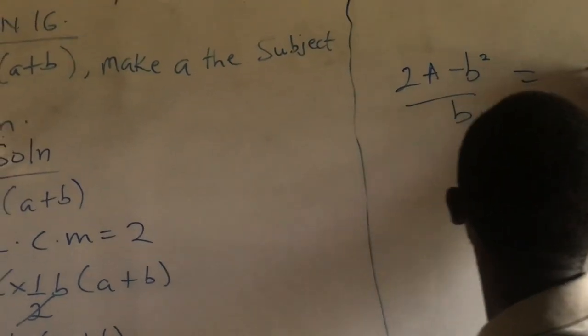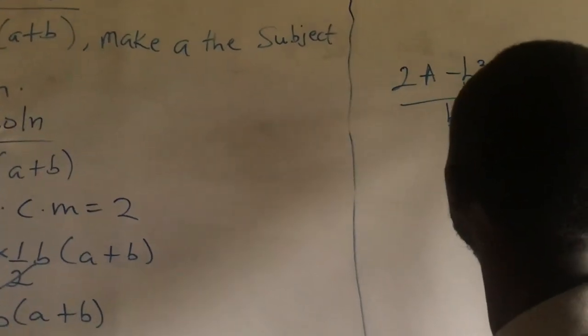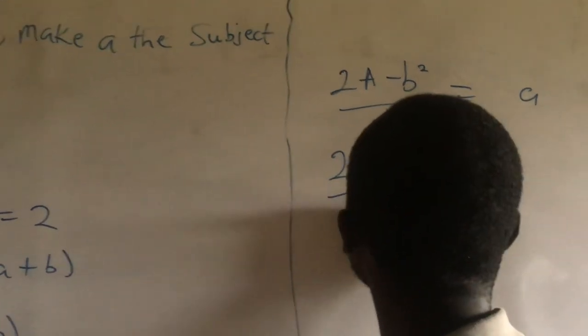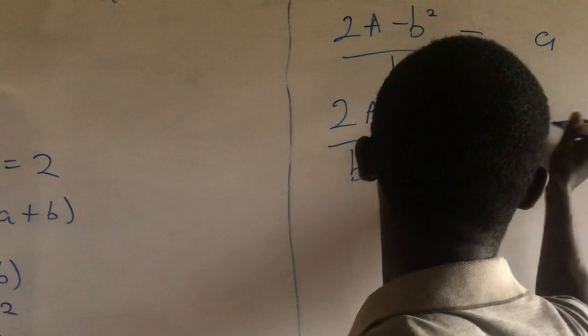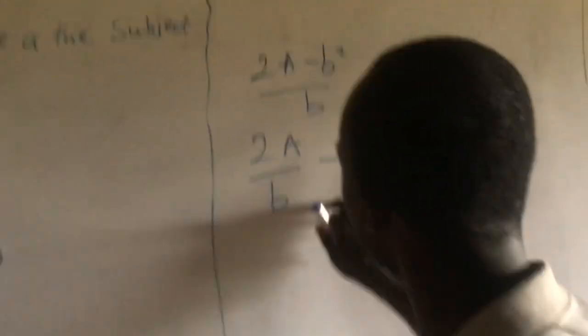But this one is the same as 2A over B minus B squared over B, equal to A. This is the same as this.